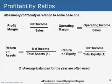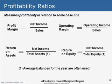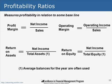The fourth and final set are profitability ratios. There are four to consider: profit margin, which is net income divided by sales; operating margin, which is operating income divided by sales; return on assets, which is net income divided by total assets using the average balance for the year; and return on equity, which is net income divided by total average equity during the year.